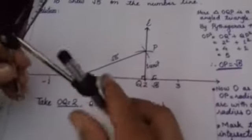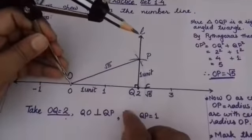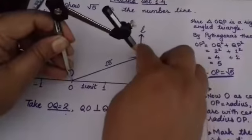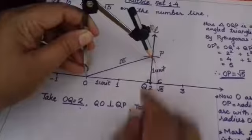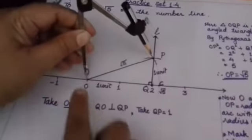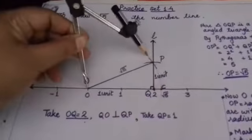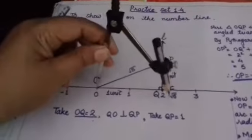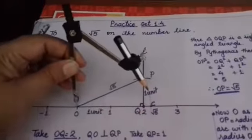See here, we have taken O as center and P, OP as radius. O as center and OP as radius. We have to draw one arc which touches the number line at point C.